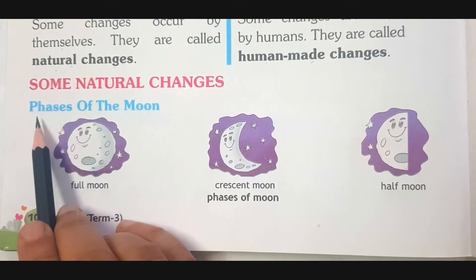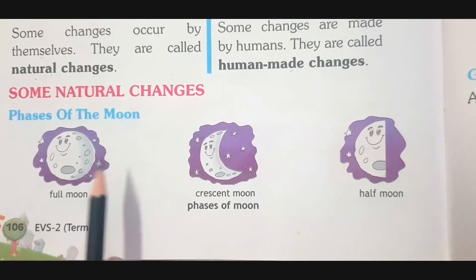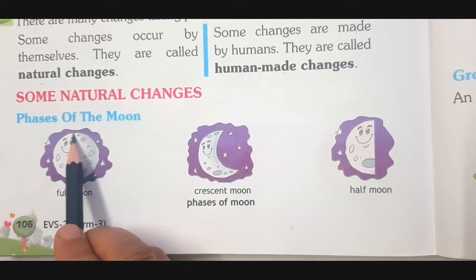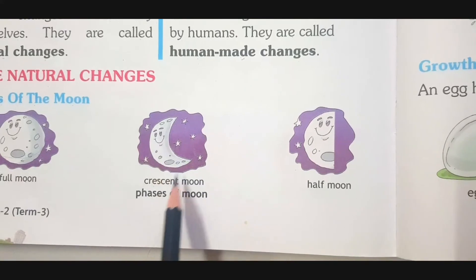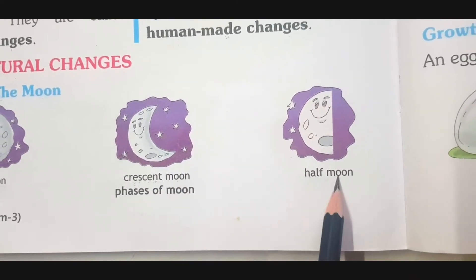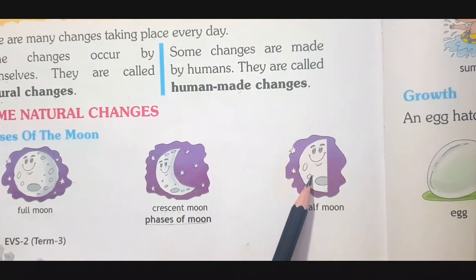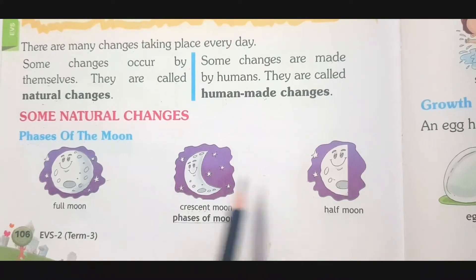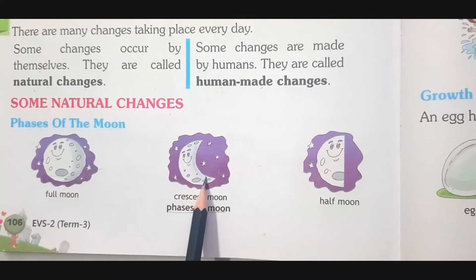Phases — P-H-A-S-E-S — phases of the moon. Have you all seen the moon in the sky, children? Every day if you watch, you will see that the moon changes its face. Sometimes you see a full moon, shining brightly. Sometimes you see a crescent moon — C-R-E-S-C-E-N-T — crescent moon. And sometimes we see a half moon. These are the phases of the moon — natural changes done by nature itself. Human beings cannot change the shape or face of the moon. Here we have full moon, crescent moon and half moon.